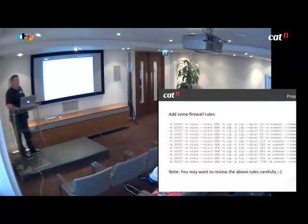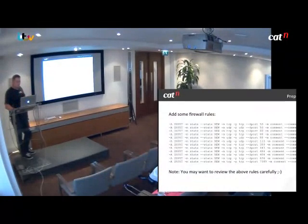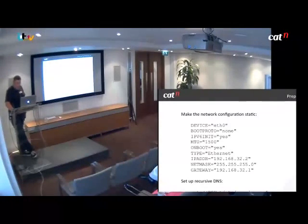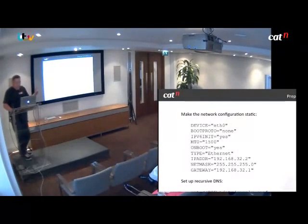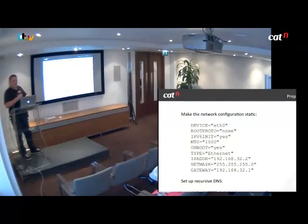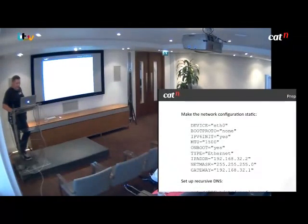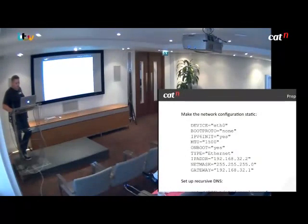A DogTag server is a centralized management point for SSL certificates. So once you've got your firewall set up, you need to make sure that you've got a static network configuration, because you don't want an important server like this getting rebooted and ending up on a new IP somewhere else. And you're also going to want some off-box DNS as well, but presumably you've already got that.